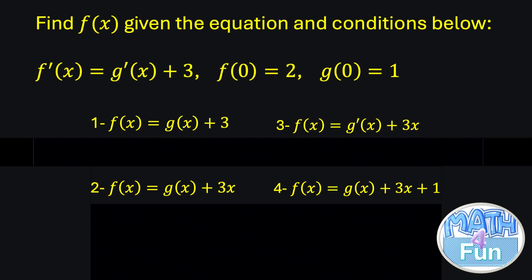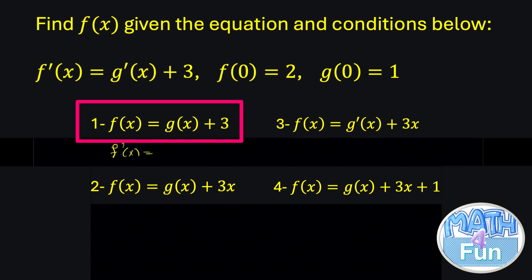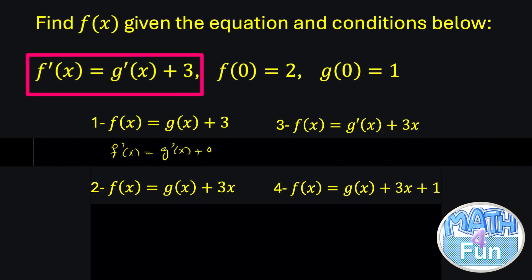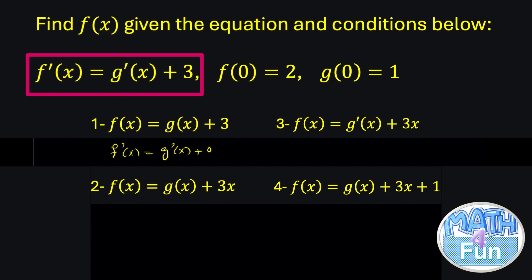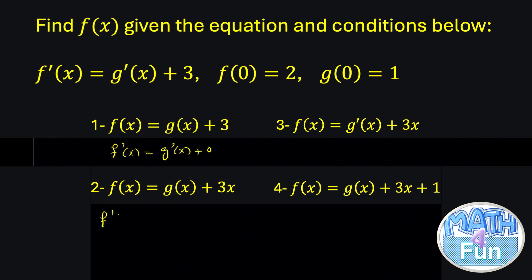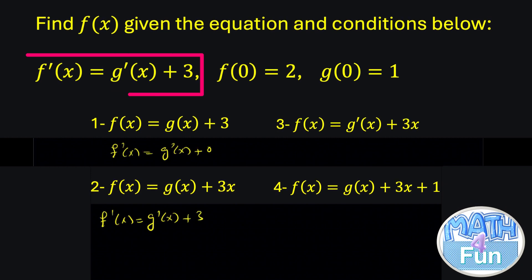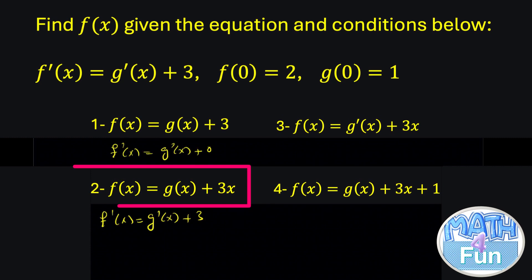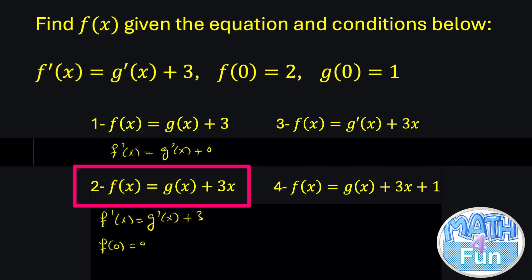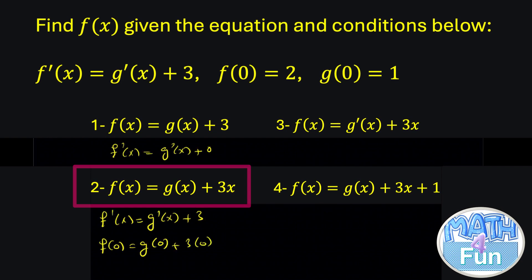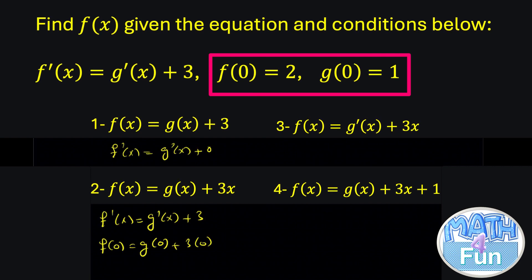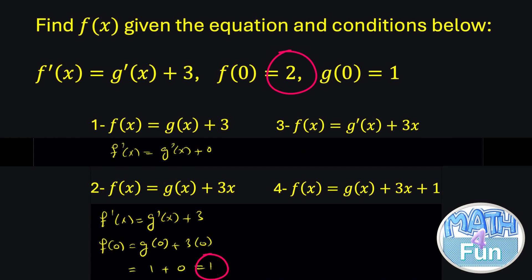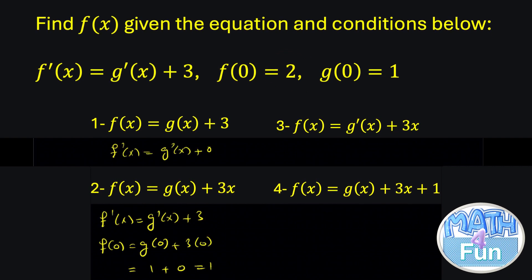To find which choice is correct, let's try deriving the functions. For choice 1, f′(x) equals g′(x) plus 0, but the question requires g′(x) plus 3, so choice 1 is not correct. For choice 2, f′(x) equals g′(x) plus 3, which matches. But testing f(0): f(0) equals g(0) plus 3 times 0, which gives 1 plus 0 equals 1, not 2. So choice 2 is also not correct.